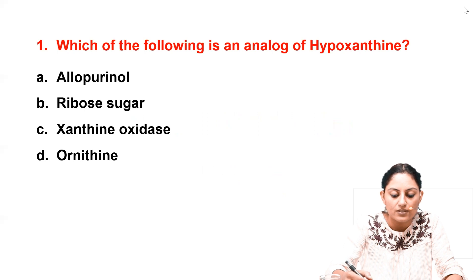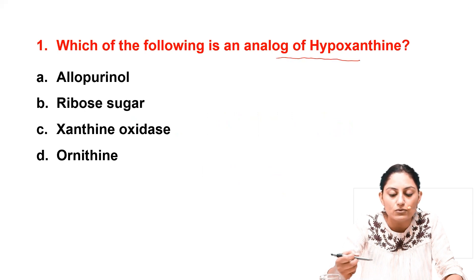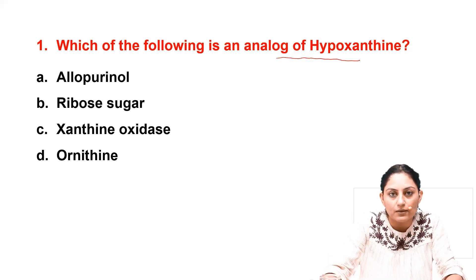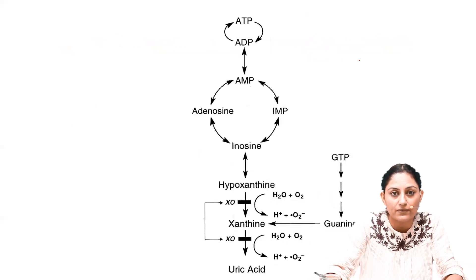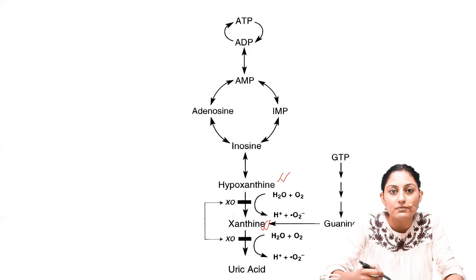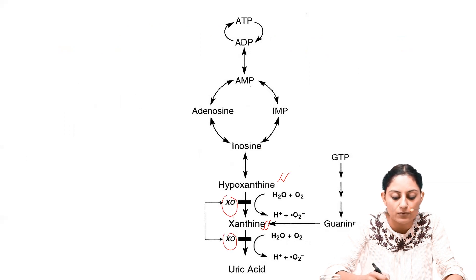In this question, we are asked about the analogue of hypoxanthine. We need to know which pathway hypoxanthine comes in. This is the purine degradation pathway. Inosine is converted into hypoxanthine, which is then converted into xanthine, and finally into uric acid. The enzyme involved is xanthine oxidase, present in both steps.